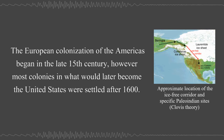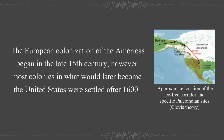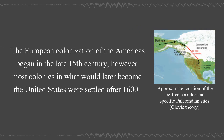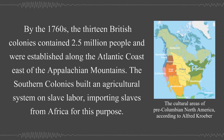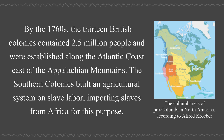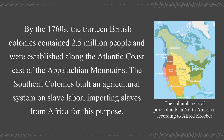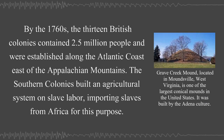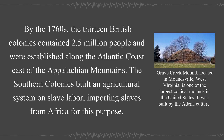The European colonization of the Americas began in the late 15th century; however, most colonies in what would later become the United States were settled after 1600. By the 1760s, the 13 British colonies contained 2.5 million people and were established along the Atlantic coast east of the Appalachian Mountains. The southern colonies built an agricultural system on slave labor, importing slaves from Africa for this purpose.